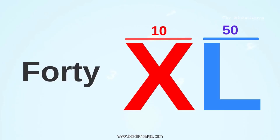Here we have one more example: XL. Smaller number before larger number — X is 10 and L is 50 — so taking 10 from 50 is 40.